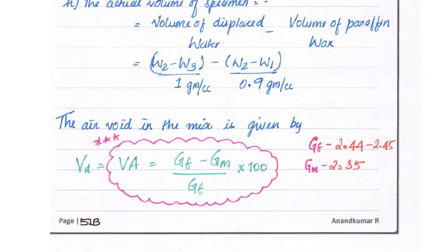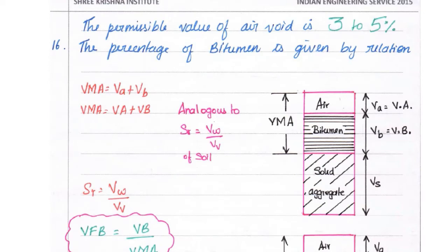The void in the mix is given by Va = (Gt - Gm)/Gt × 100. Gt = 2.442 to 2.45 and Gm = 2.35. The permissible value of air void is 3 to 5%.